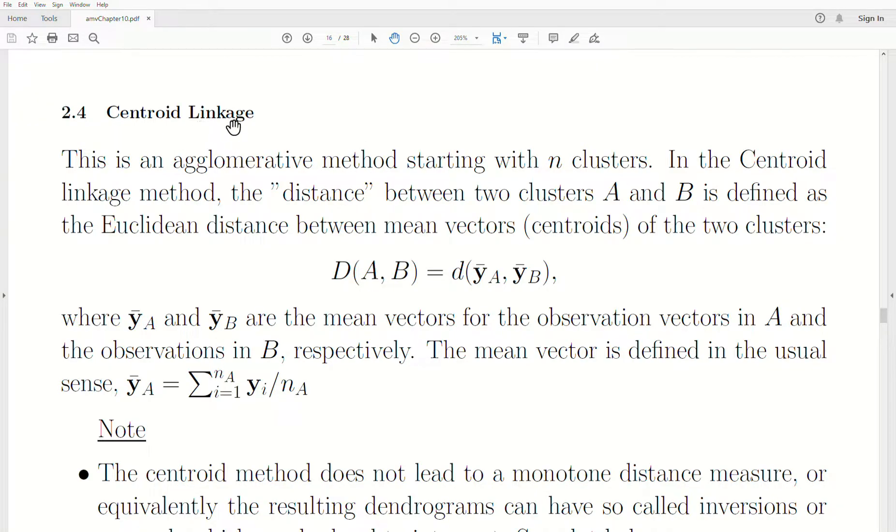So first, the centroid linkage method. This is an agglomerative method starting with n clusters. And in this centroid linkage method, the distance between two clusters is defined as the Euclidean distance between the mean vectors, which are called centroids of the two clusters. The distance is whatever distance you're using is the distance between the two centroids of each of those clusters.